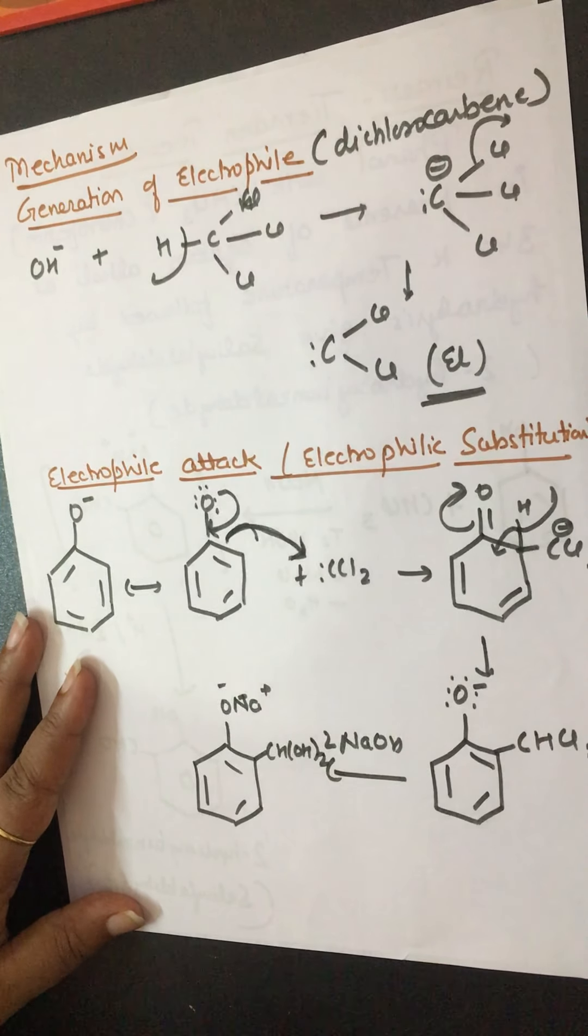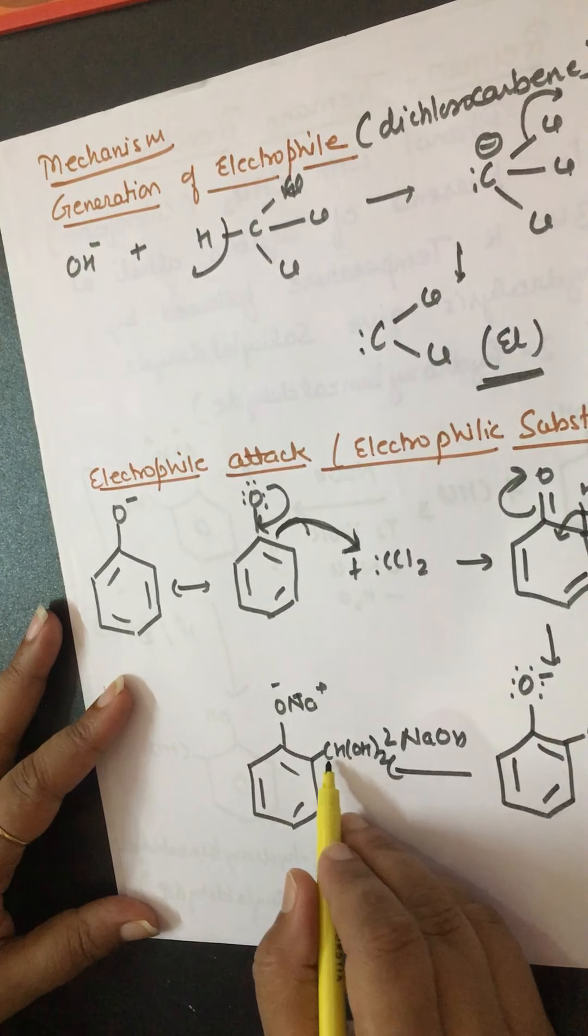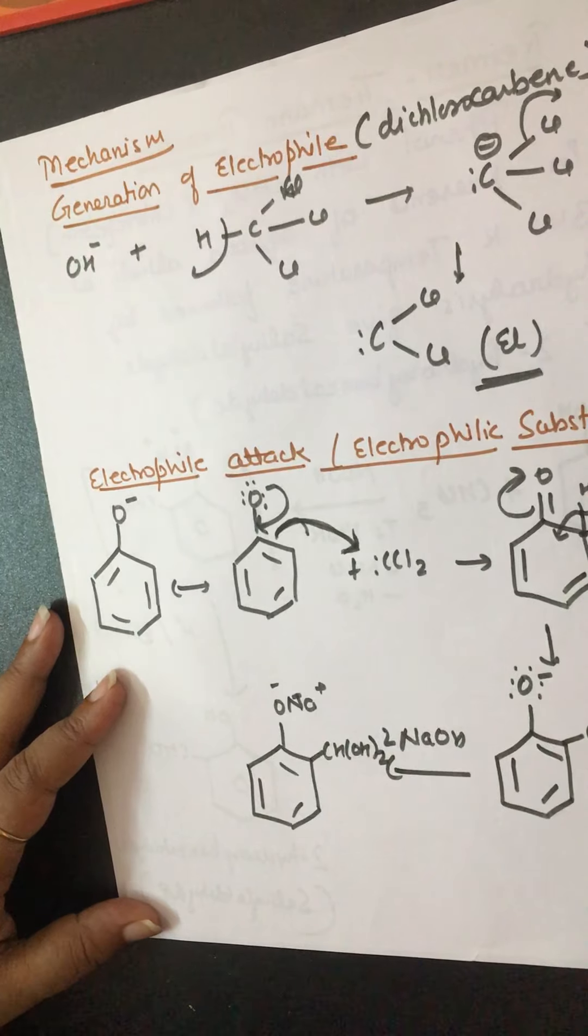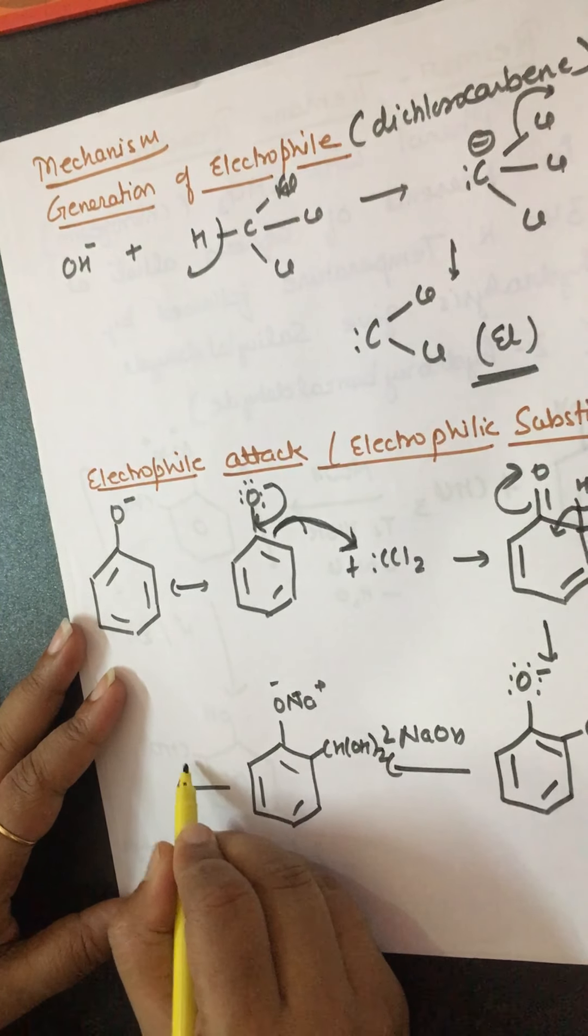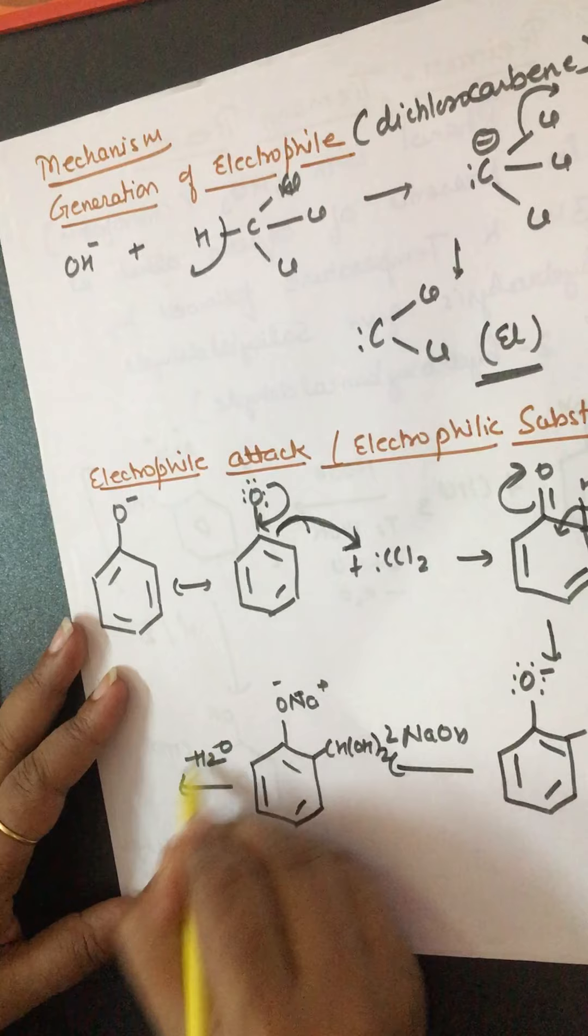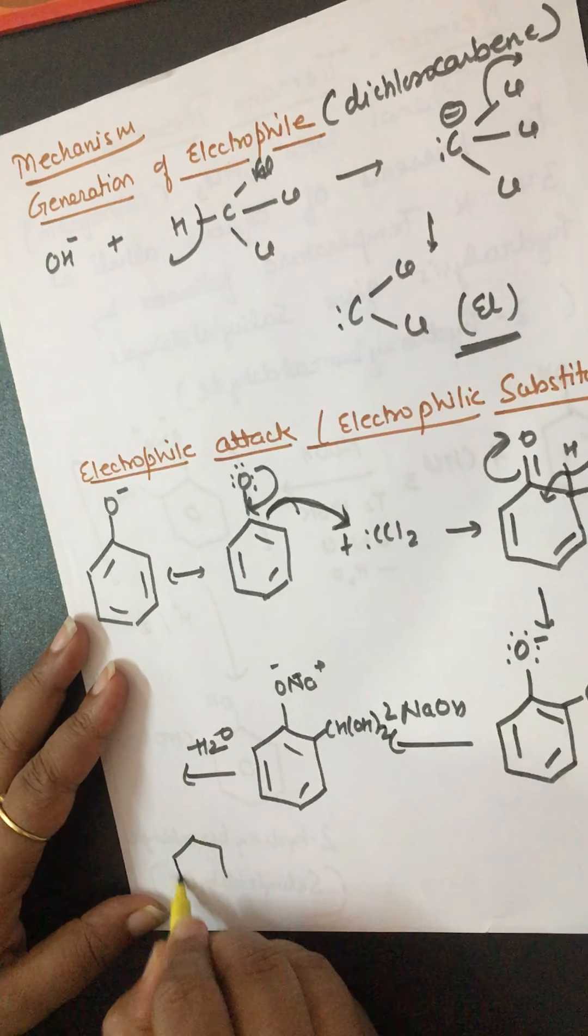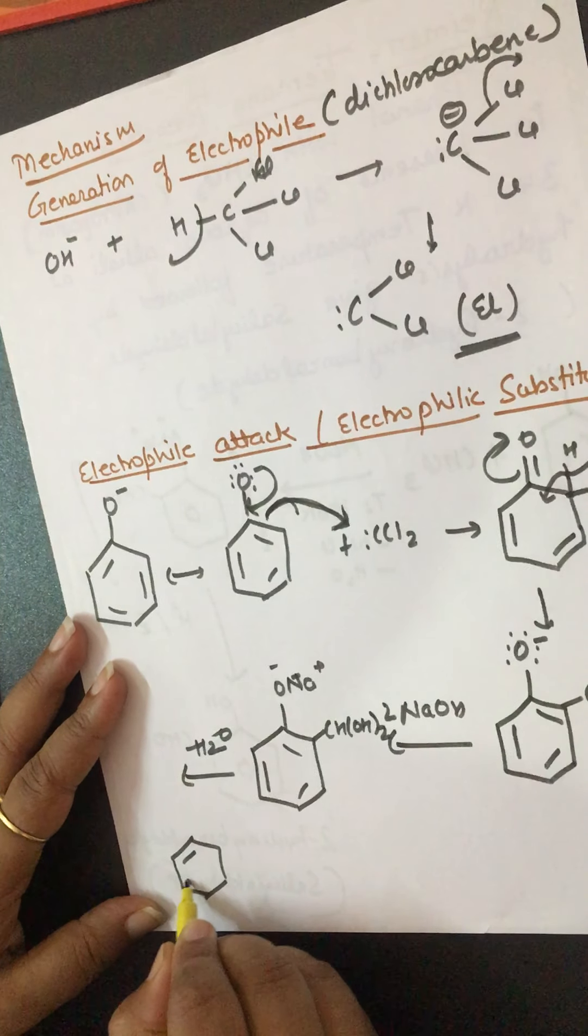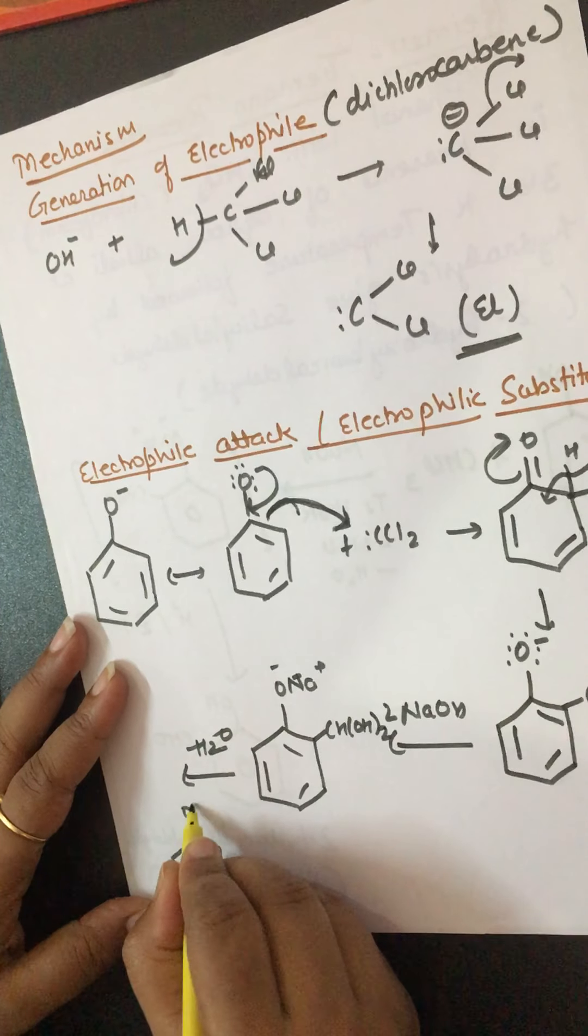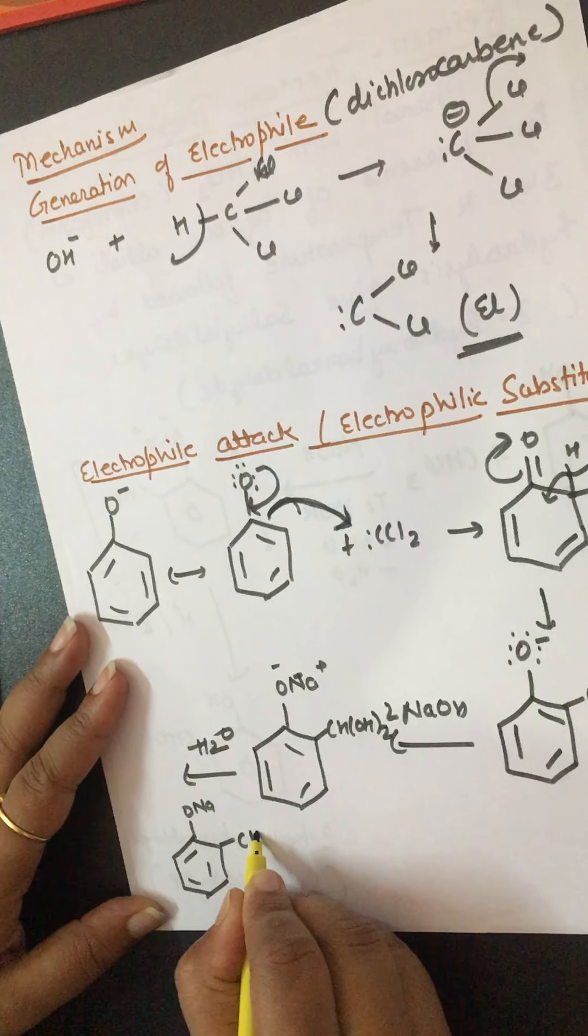OH twice. One carbon with two OH groups is unstable, so H2O will be removed out, minus H2O, and it gives out ONa CHO.